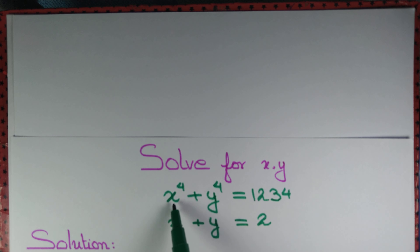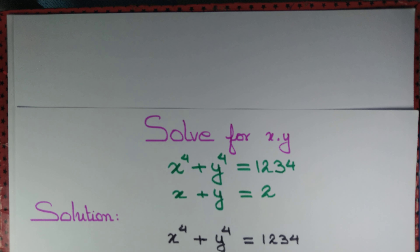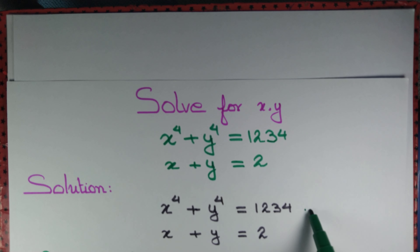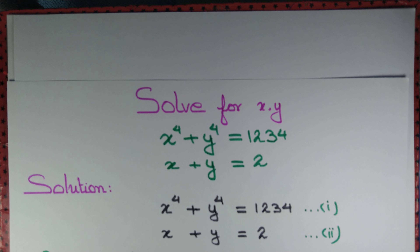Let us solve the equations x⁴ + y⁴ = 1234 and x + y = 2 simultaneously. We have two equations: x⁴ + y⁴ = 1234, let's call this equation 1, and x + y = 2, let's call this equation 2. We want to solve these two equations simultaneously. There are several methods; one of them is to express x⁴ + y⁴ in terms of x + y.